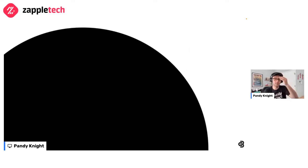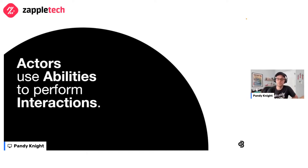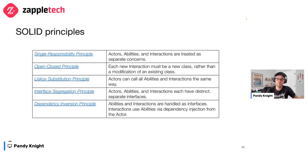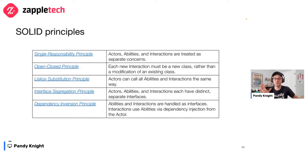As we said before, the screenplay pattern can be summed up simply: actors use abilities to perform interactions. For those who like object-oriented programming, the screenplay pattern can be seen as a SOLID refactoring of the page object convention. SOLID refers to five design principles for maintainability and extensibility: Single Responsibility, Open-Closed, Liskov Substitution, Interface Segregation, and Dependency Inversion. The screenplay pattern follows each of these quite nicely — take a snapshot of this table and check out each principle; Wikipedia is actually a good source.